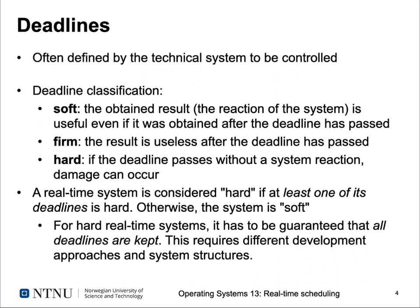And finally, there are hard deadlines. For hard deadlines, if the deadline passes without a system reaction, damage can occur — for example, our robot falling down a cliff because our system took too long to decide to brake as a reaction to some sensor input. A real-time system overall is considered hard if at least one of its deadlines is hard; otherwise, we describe a real-time system as being soft. For hard real-time systems, it has to be guaranteed that all deadlines are met, which requires different development approaches compared to usual desktop or server computing, and also different structures of our computing system.